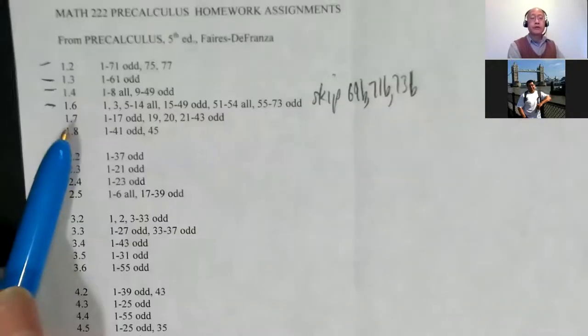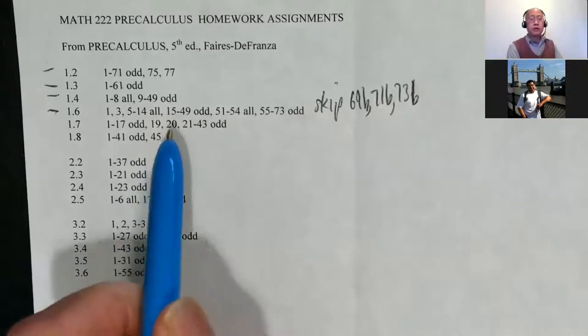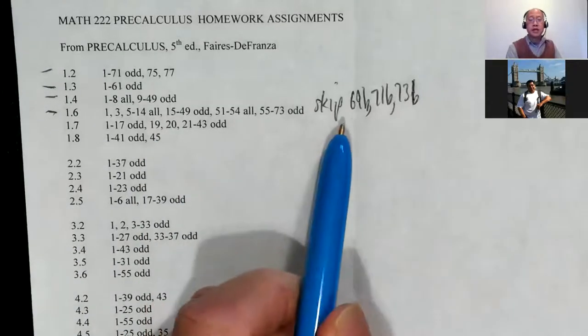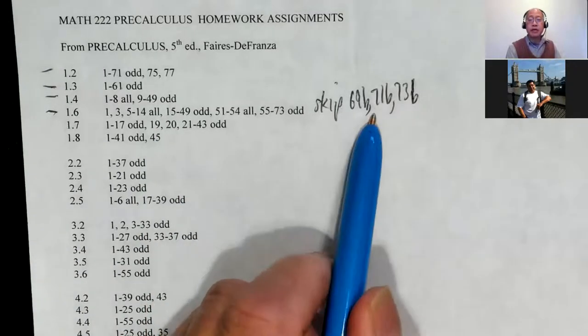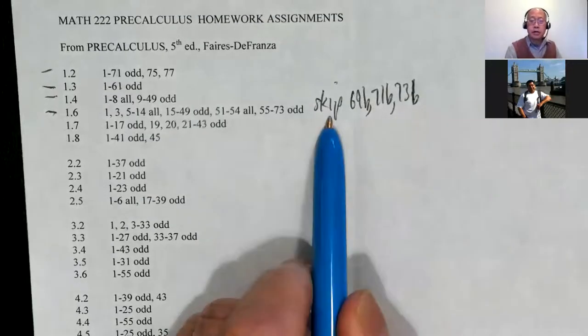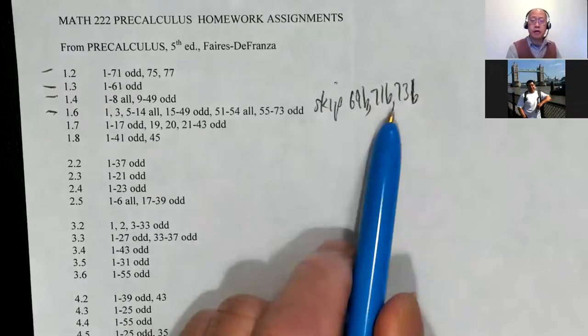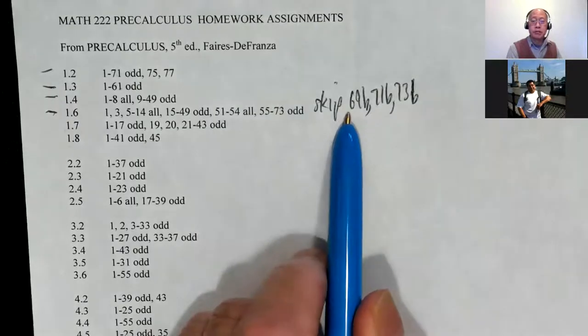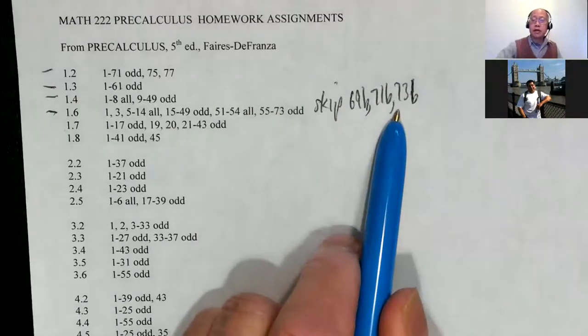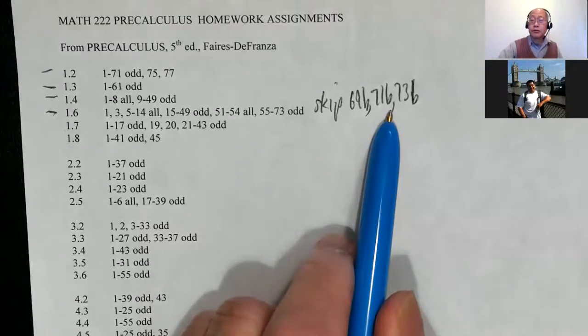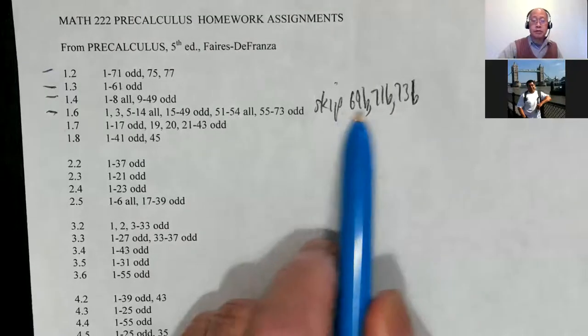All right, recording in progress, share the screen. So we're finishing up 1.6 — let me get that focus in. I think I said this in the video over the weekend, but skip 69B, 71B, and 73B. Those are not really good questions for pre-calc, they're good for calc, but not for pre-calc. So skip 69B, 71B, 73B — I alluded to it in the video I sent over the weekend, but just in case you missed it, there it is.